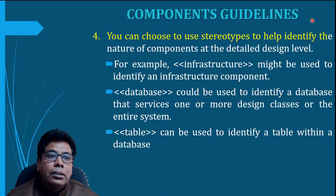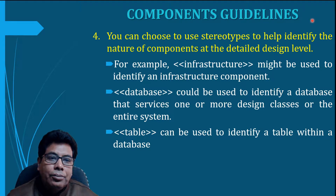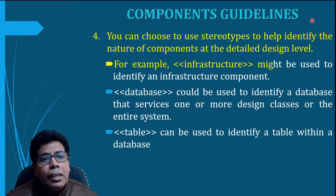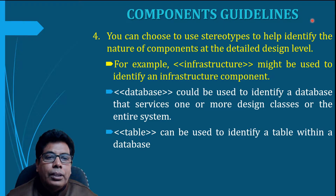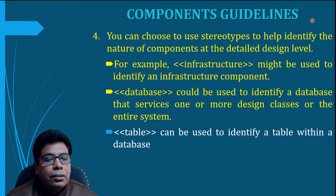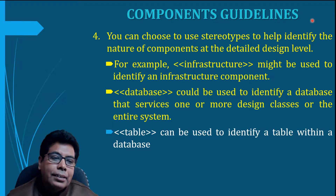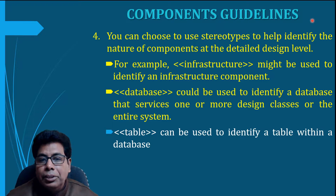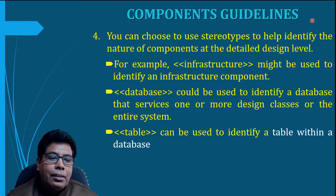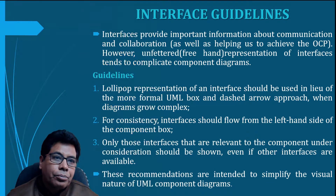The fourth guideline is that you can use stereotype names to identify the nature of components. For example, 'infrastructure' is a common stereotype name used to identify infrastructure components; 'database' can be used to identify a database component or an entire database-related subsystem; and 'table' can be used to identify a table within a database component.